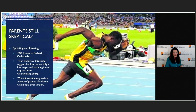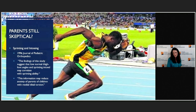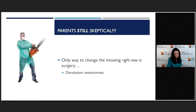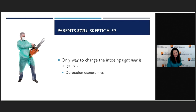In fact, if parents don't believe me, I'll reference a study — not the best study in the world — but there is some evidence to suggest you may have better sprinting ability with a little bit of in-toeing. The conclusion of that paper was really just that this information may reduce anxiety of parents of children with internal tibial torsion. When parents are still skeptical, I tell them: we can change it, but the only way to change it right now is surgery — cut the bone, untwist it, and put some metal in there to hold it together. I'm not suggesting we do that, but by that time, parents usually back up a little bit.